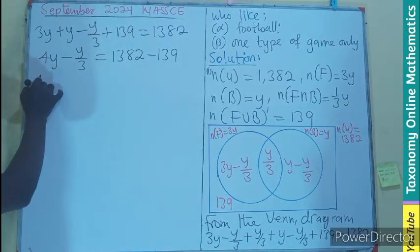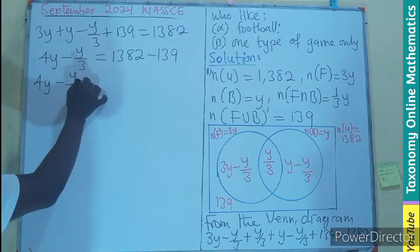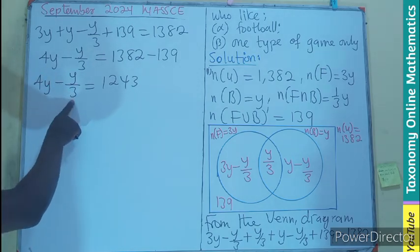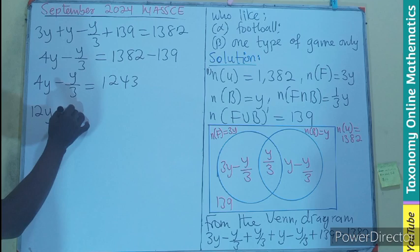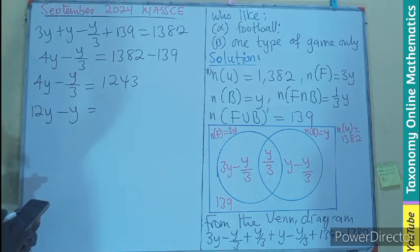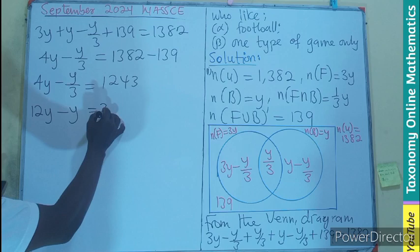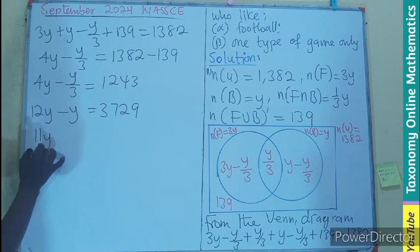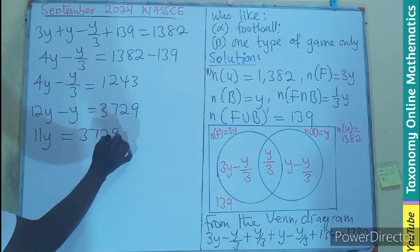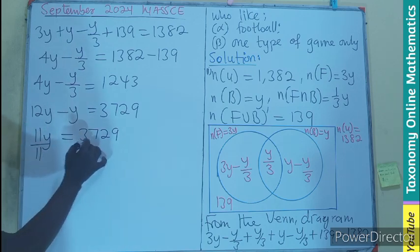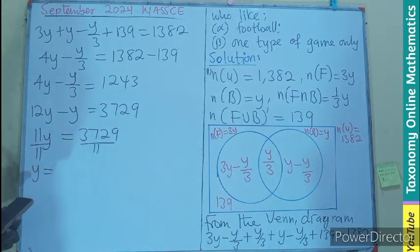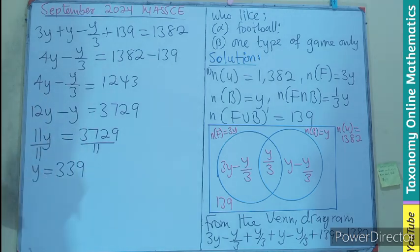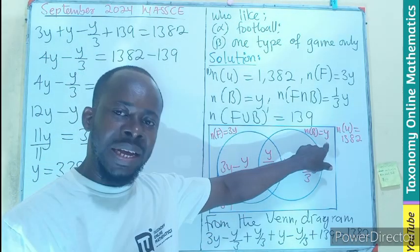We have a fraction, so multiply through by 3: 12y − y = 1243 × 3, which gives 11y = 3729. Dividing by 11, y = 339. The y represents basketball. But we are not looking for that — we are looking for football.